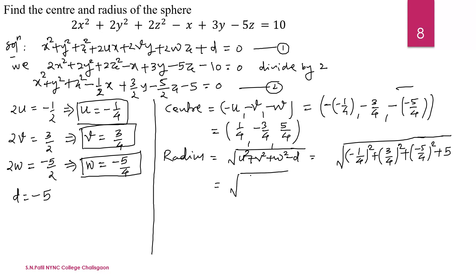That is √(1/16 + 9/16 + 25/16 + 5). The square of -1 is plus 1 and 1/4 is 1/16. Similarly here, 9/16, 25/16 and plus 5. Now here, the LCM of this under root term is 16. It can be written as 1 + 9 + 25 plus, how we get the 16 here? When we multiply and divide 16. 16 into 5. That is 80.